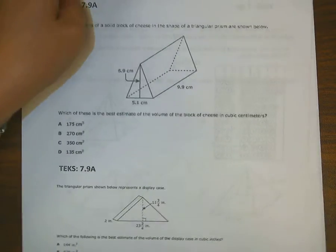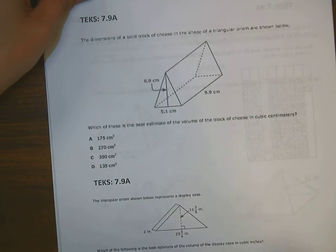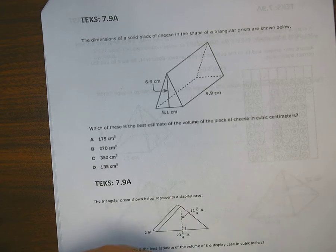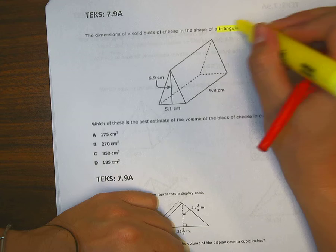Okay, still looking at the same packet, geometry and measurement, number unknown, whatever this is, 7.9A. The dimensions of a solid block of cheese in the shape of a triangular prism are shown below. What kind of prism? A triangular prism.